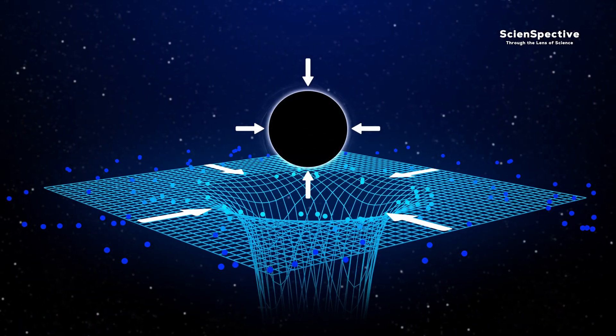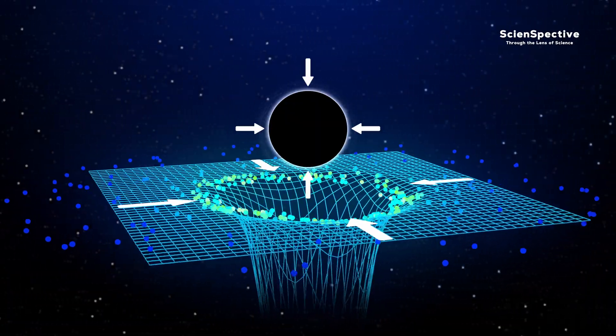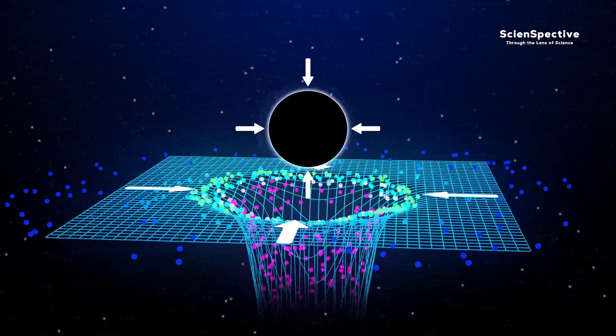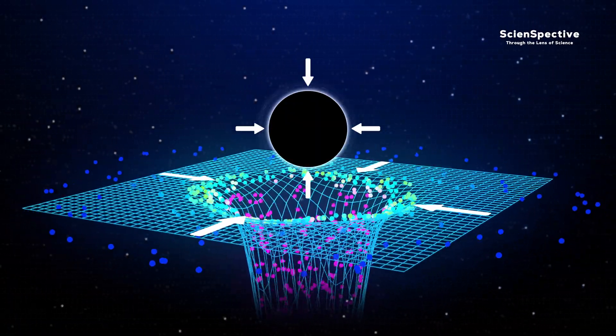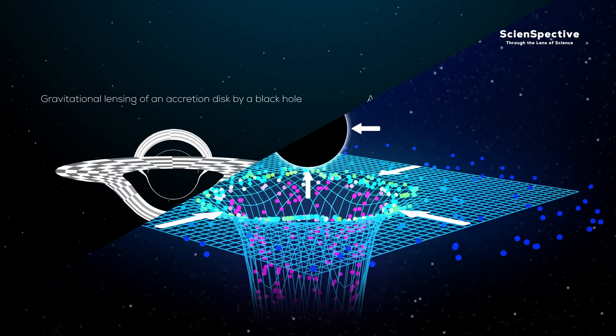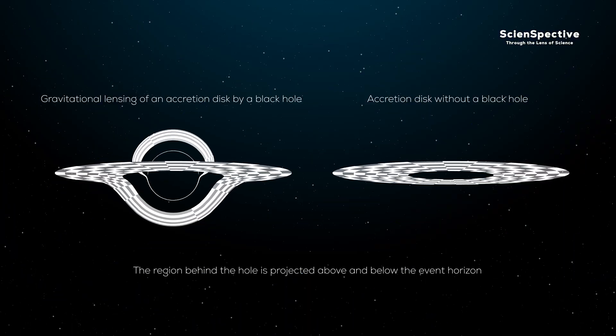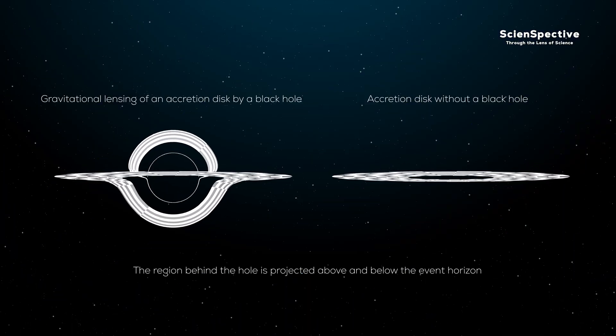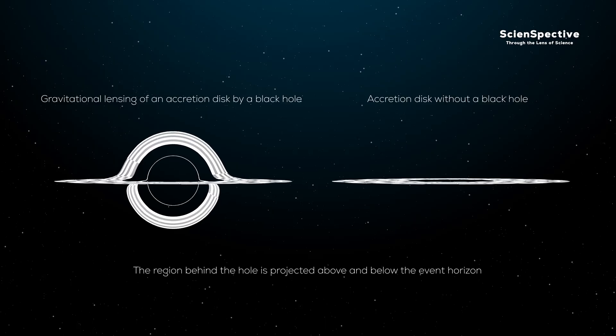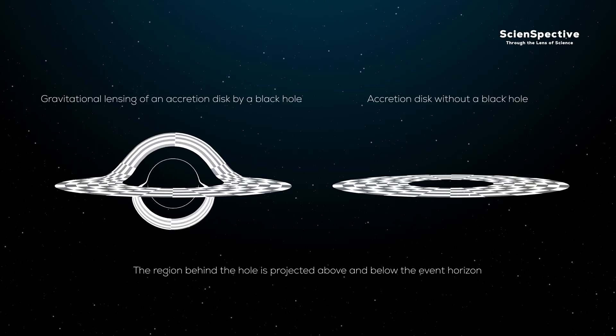However, rotating black holes drag space-time with them, not only curving it, but also twisting it. Some light rays pass above the event horizon, others below it. But their paths are too complex to examine in detail.